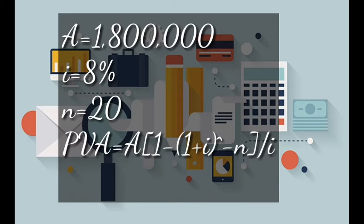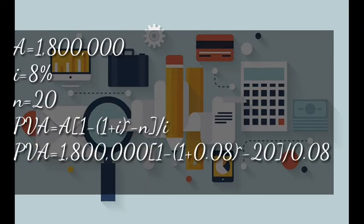From our question: annuity A equals 1,800,000; interest rate i equals 8% (0.08); and n equals 20 years. We shall use the formula: PVA equals A times bracket 1 minus bracket 1 plus 0.08 bracket to the power negative 20, all divided by 0.08.